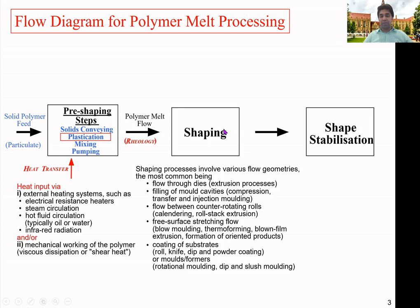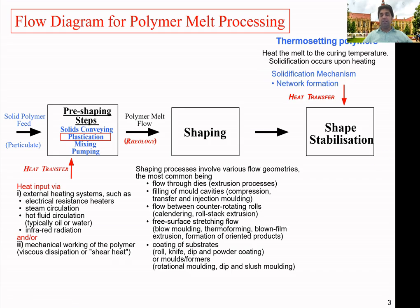During shape stabilization, we may need to add or remove heat depending on the material type. There are two types: thermosetting and thermoplastic polymers. For thermosetting polymers, heating causes an irreversible reaction with network formation, which means they cannot be reprocessed. Once formed into a shape, they cannot be remelted and reshaped.